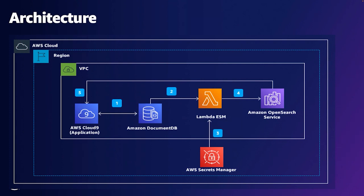We do this with the Lambda ESM integration. For this demo, I'll be using AWS Cloud9, a browser-based terminal from AWS, to simulate my application. I'll be running a script that loads review data — artificial review data — into DocumentDB row by row. That data is read by Lambda ESM in near real time and streamed to Amazon OpenSearch. Lambda ESM reads the data from Amazon DocumentDB change streams. We have to enable Amazon DocumentDB change streams, as they are disabled by default. We are using AWS Secrets Manager to store Amazon DocumentDB credentials, which Lambda ESM requires.